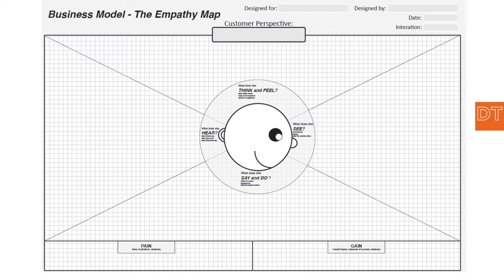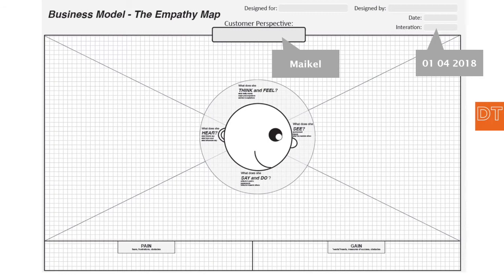I'm going to give an example. I just interviewed someone named Michael, whom I interviewed in 2018, and I met him in a hospital. He had a scan, and he was a little bit confused — to put it mildly — and a little bit angry as well. I wanted to understand what happened, and I used the empathy map for it.